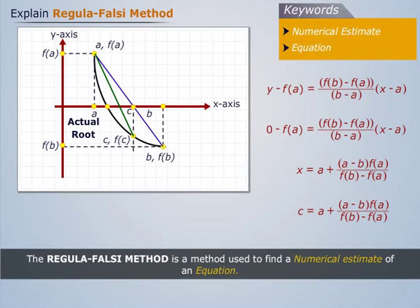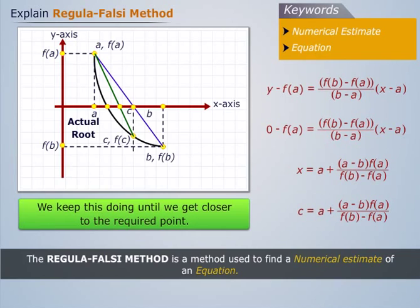Now again draw a line between the points shown and again find the new point of intersection. We keep doing this until we get closer to the required point.